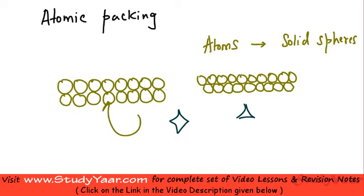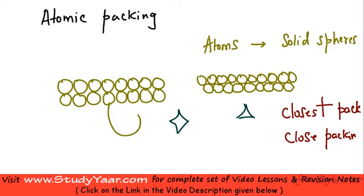Therefore there is more empty space present or more vacant space present in this type of packing as compared to this type of packing. So in nature most of the elements they are going to arrange themselves in this type of packing and this type of packing is known as closest packing or close packing. So we are going to now analyze closed packing.